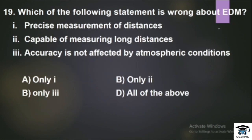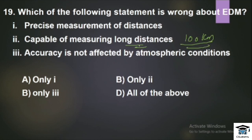Question: Which of the following statements is wrong about EDM? Statement 1: Precise measurement of distances. Statement 2: Capable of measuring long distances — maximum range of EDM is 100 km. Statement 3: Accuracy is not affected by atmosphere conditions — this is wrong. So the wrong statement is the third one, answer is option B.